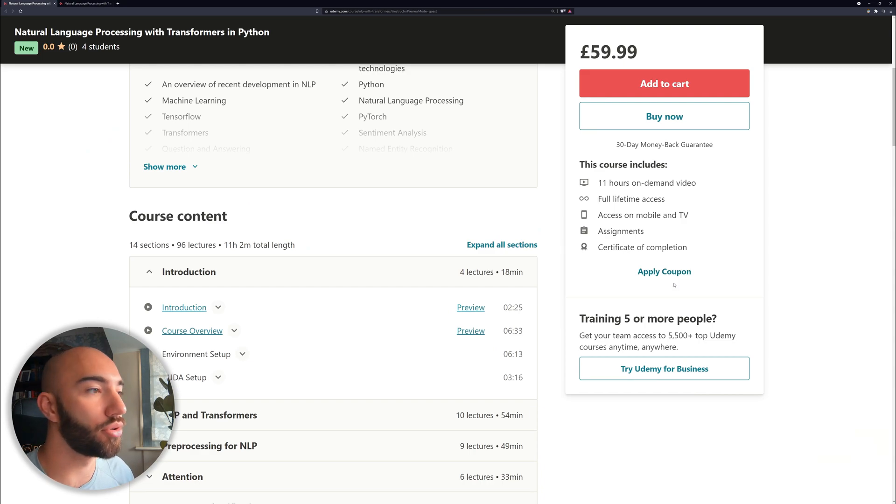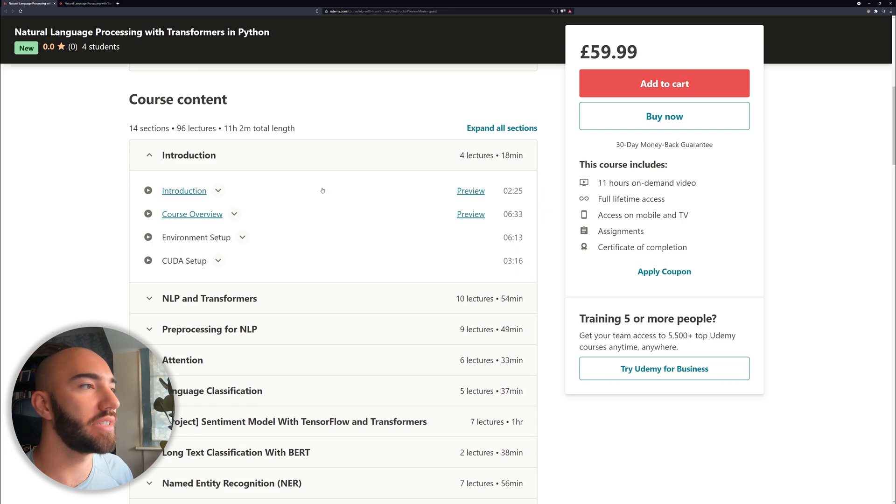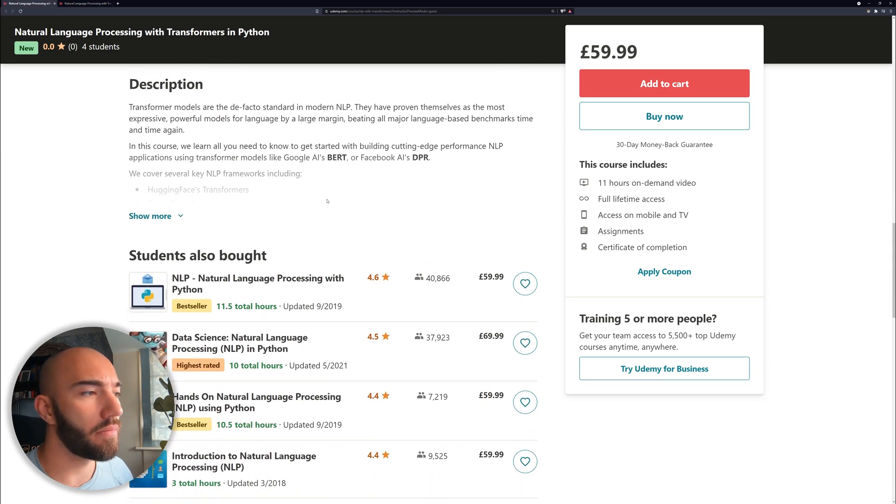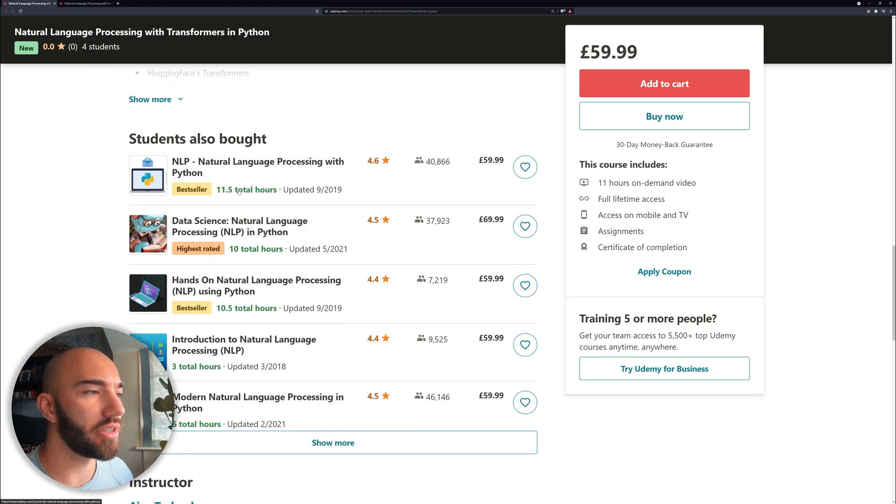All together, there's 11 hours of content. So it's, I think, comparatively long when you look at other NLP courses. So we see this 11, 10, 10, 3 and 6. And as far as I'm aware, it's the first course that focuses on Transformers on Udemy.